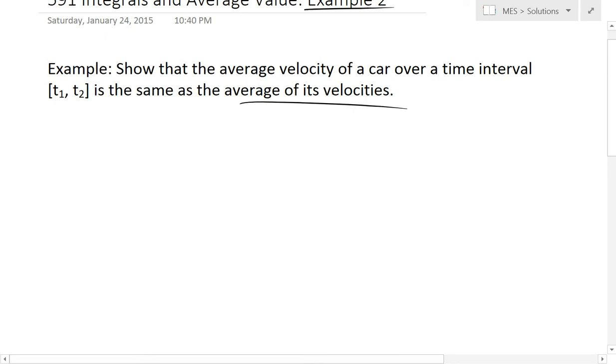And what this is saying is the average velocity is just the velocity that you need to get from point A to point B over a certain time. And this average of its velocities is if it had many different velocities and then you average those up. This is saying show that they're both the same thing.